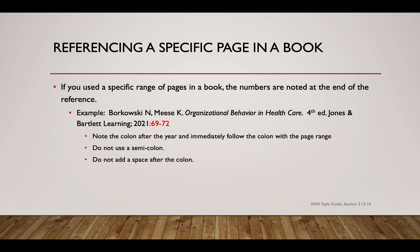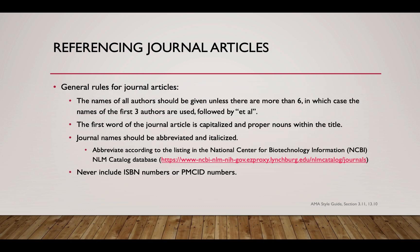If you use a specific range of pages in a book, the numbers are noted at the end of the reference. After the year of publication, add a colon immediately followed by the page range with no spaces — for example, page 69 through 72. You do not use a semicolon — it is a colon — and make sure the number follows right after the colon with no space.